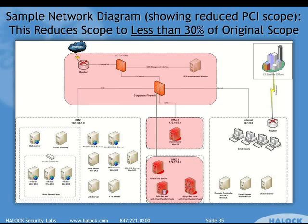We can then reduce our scope potentially to something like this. It's not that simple, and you have to talk through all the specifics — for example, how are these end users dealing with card data. If they are, they can get pulled into scope. But there are things like thin client solutions that you can use to keep them out of scope. The point is segmentation done right can drastically reduce scope and the cost for PCI.